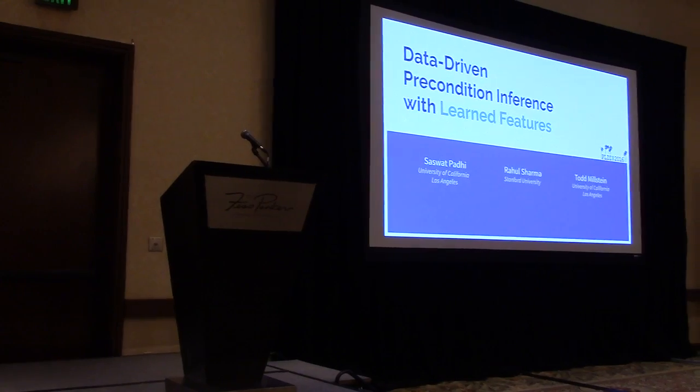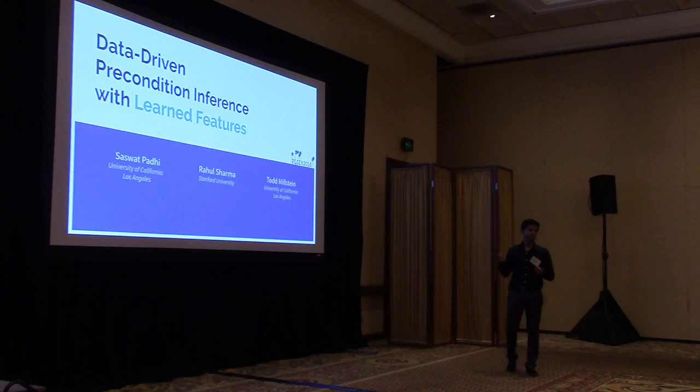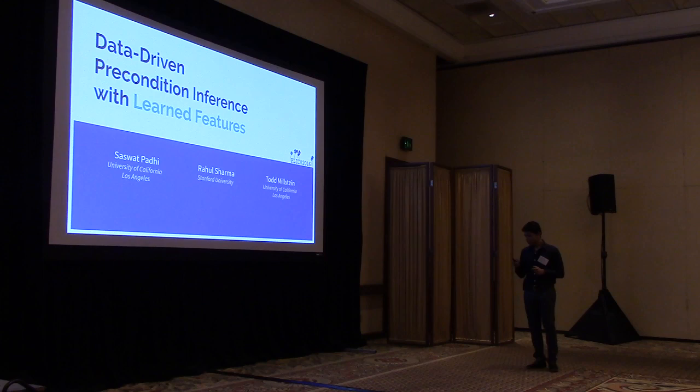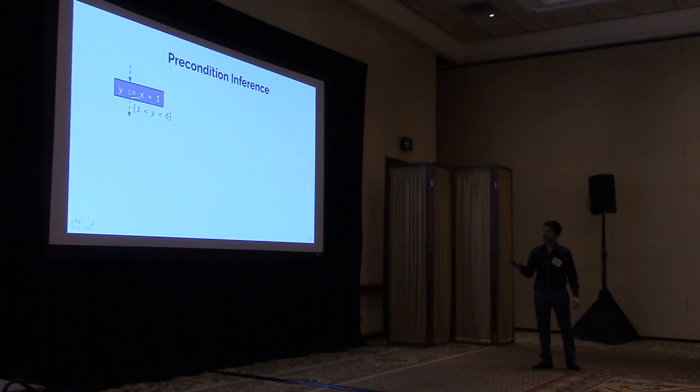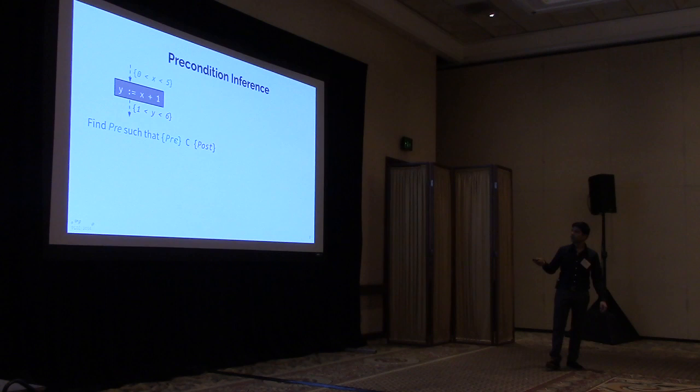This talk is about data-driven invariant inference and preconditioned inference. This was joint work with Lambo Sriman from Stanford University, advised by Professor Thomas King. The problem we are trying to solve is preconditioned inference: finding a precondition for code that satisfies a given postcondition, such that the precondition, code, and postcondition describe a valid Hoare triple.